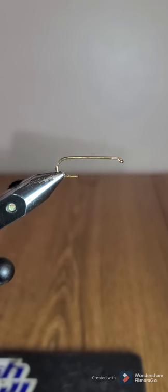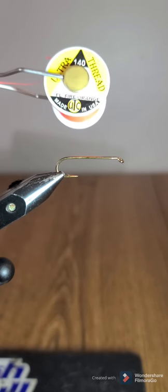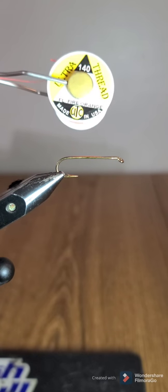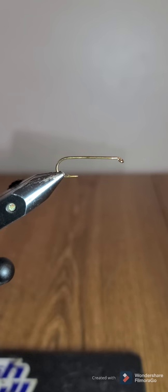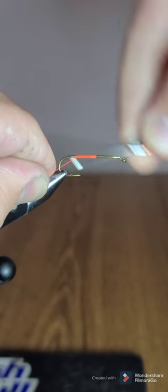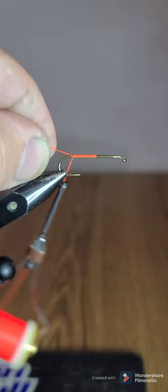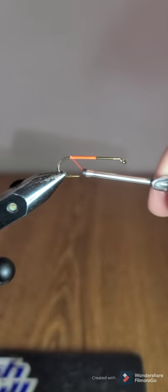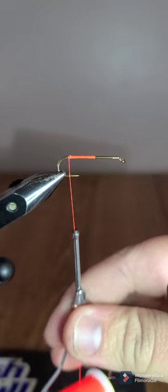In the vise here, I've got a TMCO 5262 in a size 6. And I'm going to be using UTC Ultra Thread 140 Denier in Fluorescent Fire Orange. Start about the midpoint of the shank. I want to go about to where the barb starts.